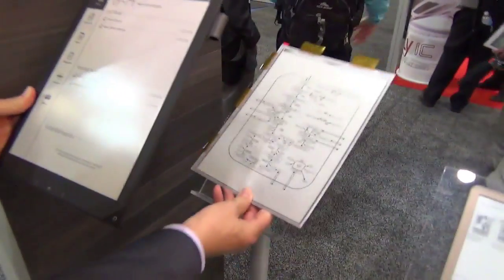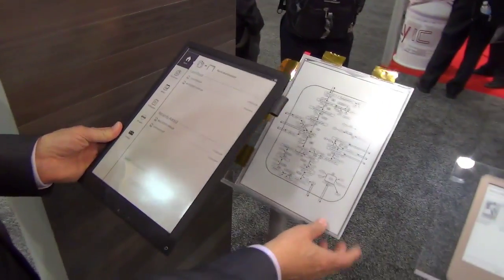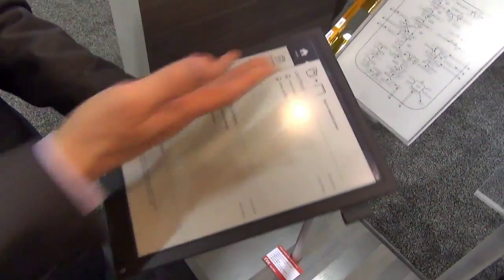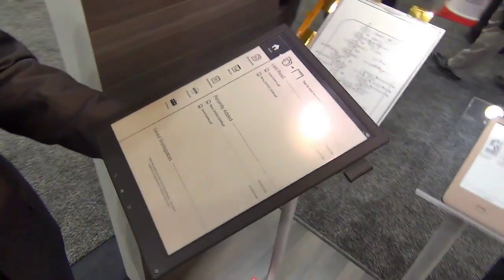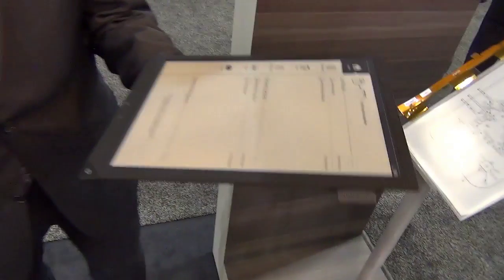The first product to actually use this is a product from Sony called the digital paper prototype. So what I have here, as you can see, is a device that is about the size of a sheet of paper. It is extremely light.